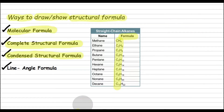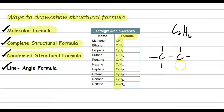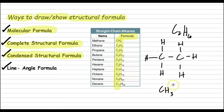How about the condensed structural formula? Let's look at ethane again. After drawing the complete structural formula, we notice that the first carbon has three hydrogens, as does the second carbon. To write the condensed structural formula, we identify the number of hydrogens on every carbon and only show the bond between carbon and carbon. The bond between carbon and hydrogen is already understood. So for ethane, we have CH3-CH3.